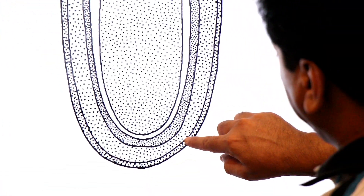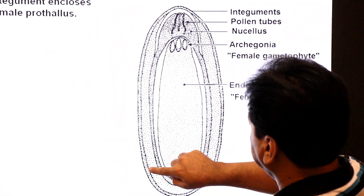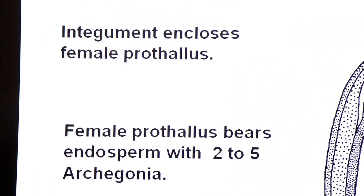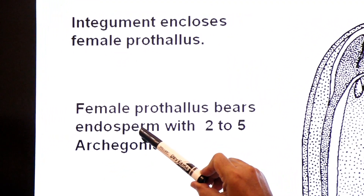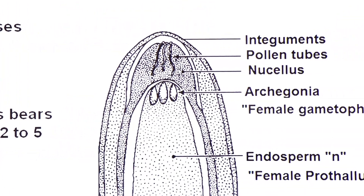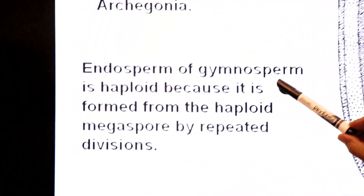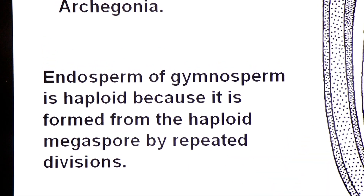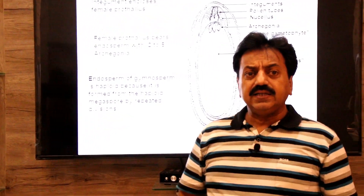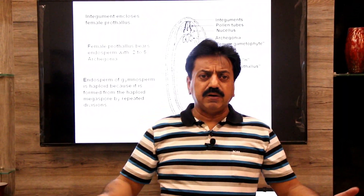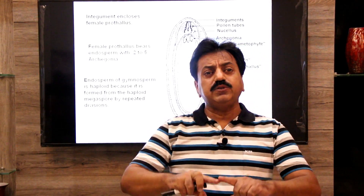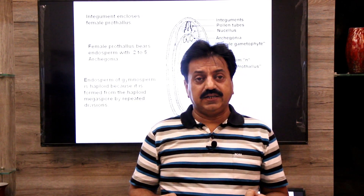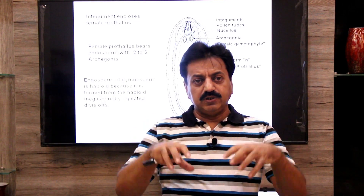The integument — the protective covering — encloses the female prothallus. The female prothallus bears endosperm, a nutritive tissue, with 2 to 5 archegonia. The endosperm of gymnosperms is haploid because it is formed from the haploid megaspore by repeated divisions. Remember: in gymnosperms, the endosperm is haploid.